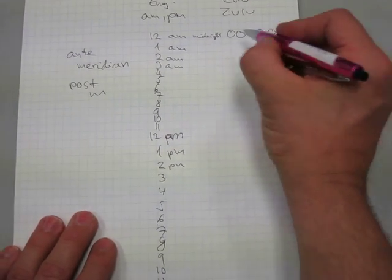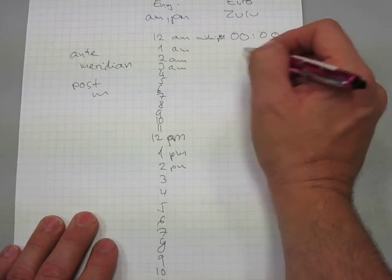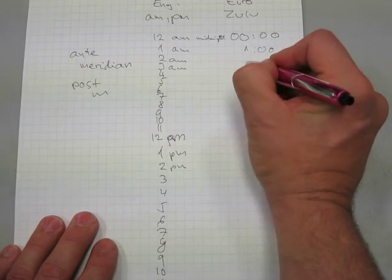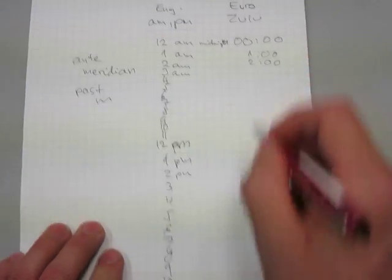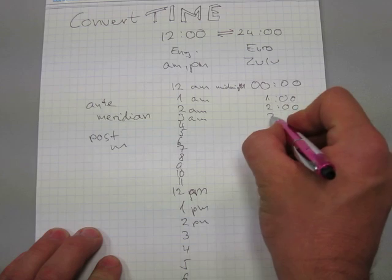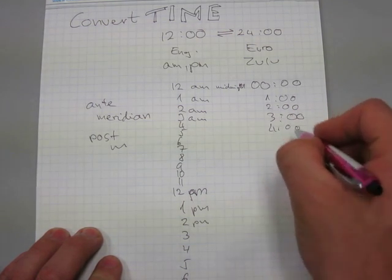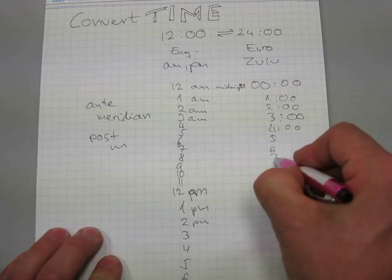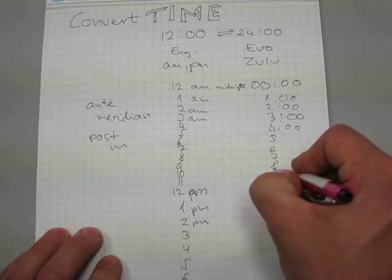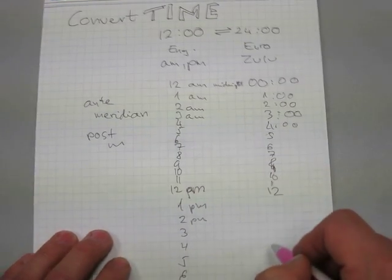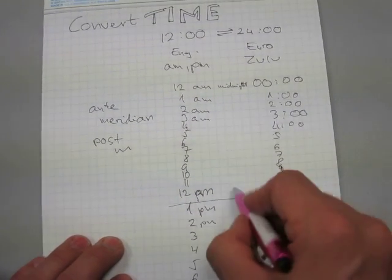And here in the 24-hour format we have 0 o'clock, we have 1 o'clock, 2 o'clock, 3, 4, 5, 6, 7, 8, 9, 10, 11, 12 o'clock. And after 12 o'clock, this is here the lunch hour.